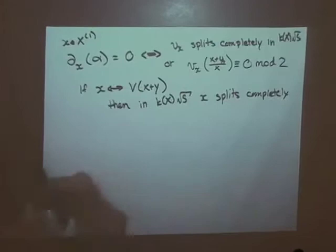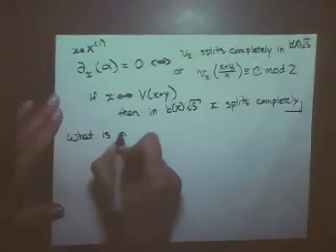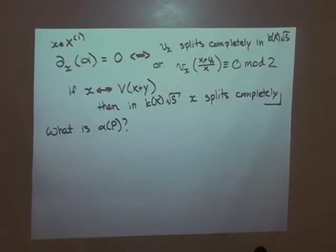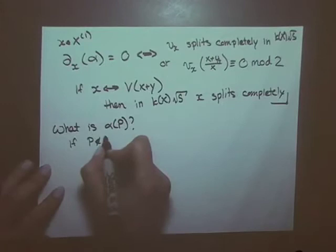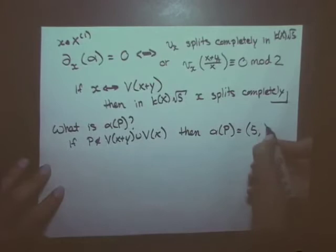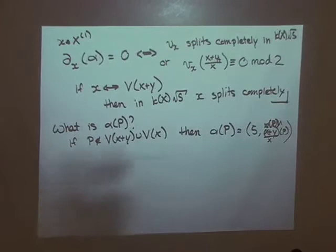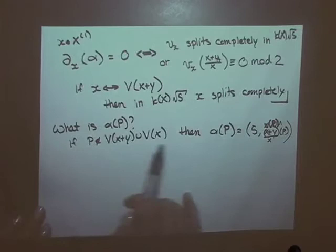What is α(p)? As long as your point is not in the vanishing of x+y or of x, α(p) is exactly the quaternion algebra where you take the function (x+y)/x and evaluate it at p. That's a non-zero number and that's our quaternion. It's not obvious what this element is on the closed subset, but away from it we just take that function evaluated at the point.